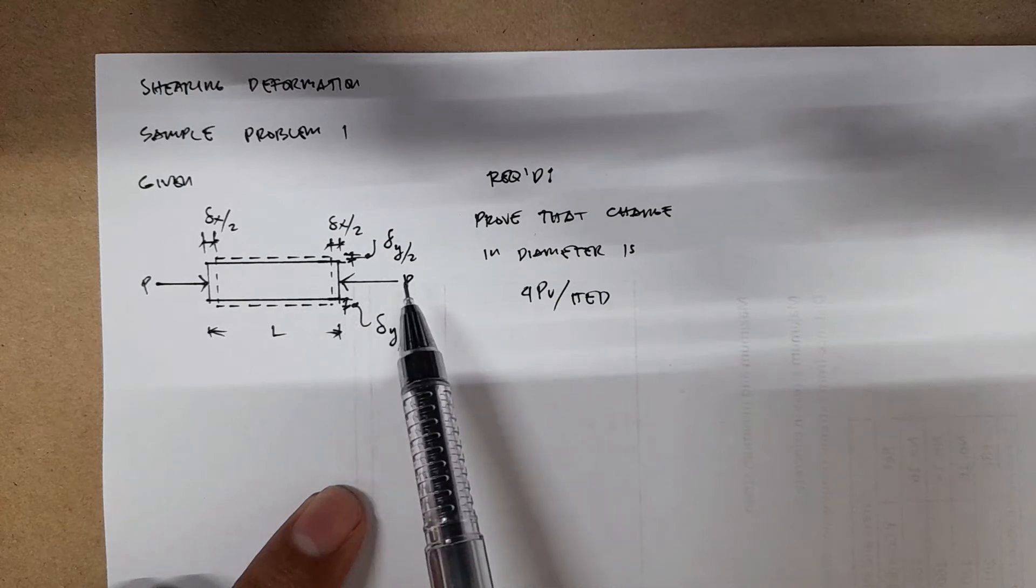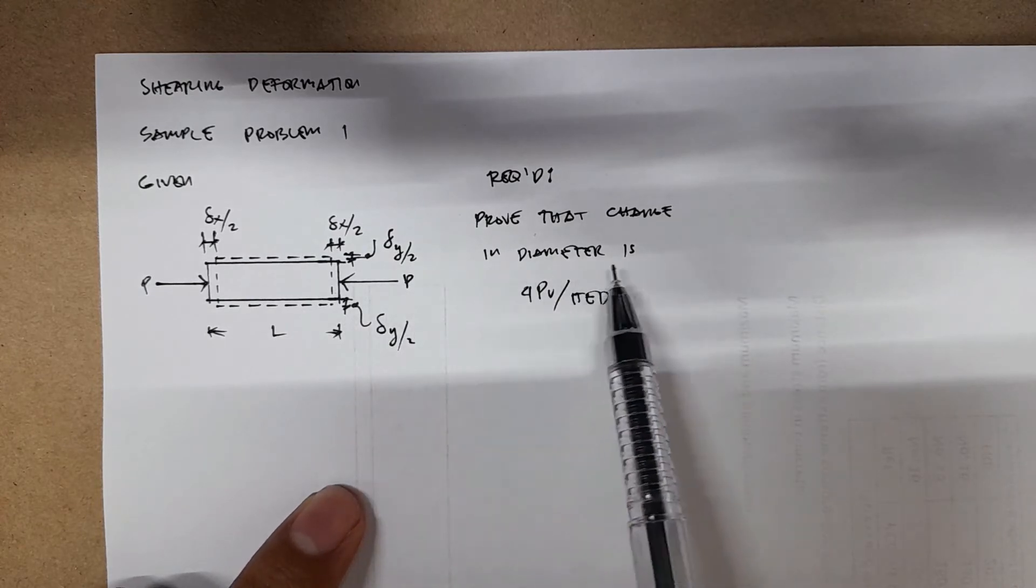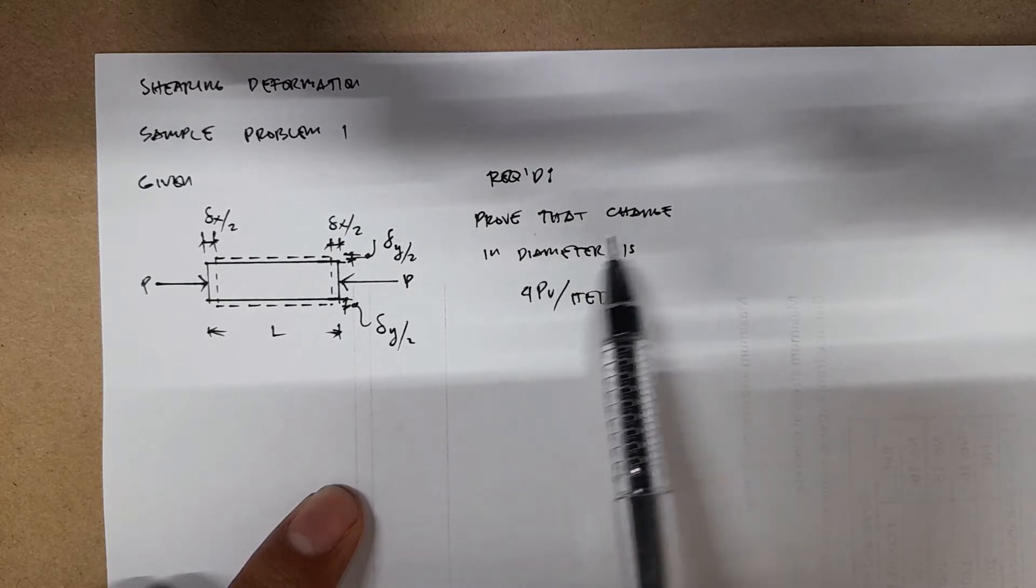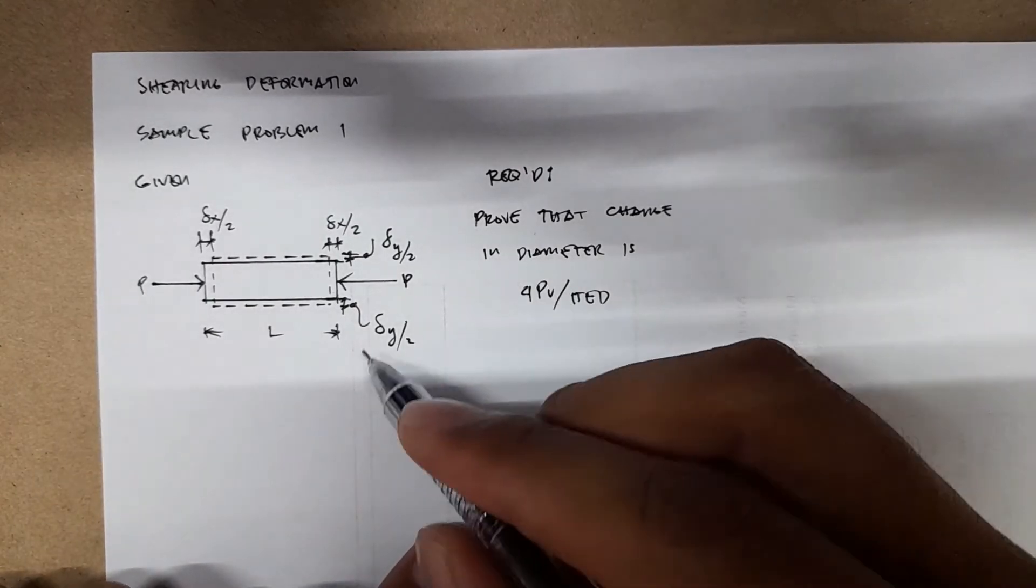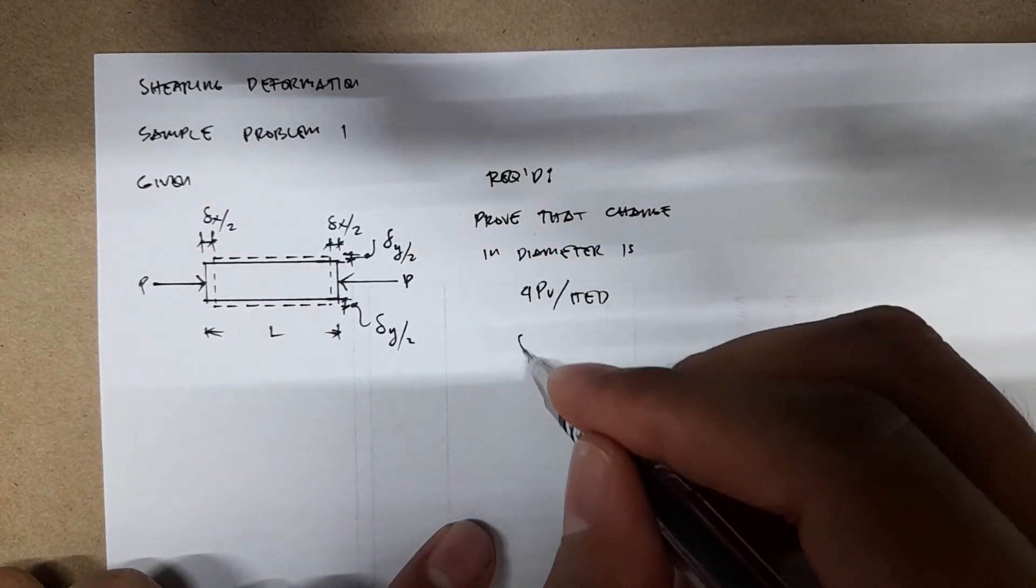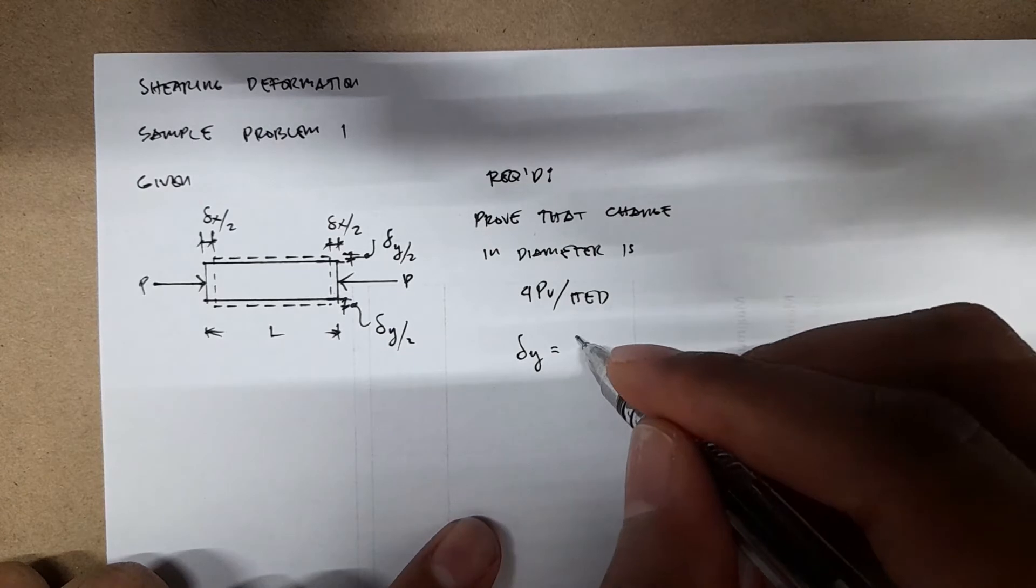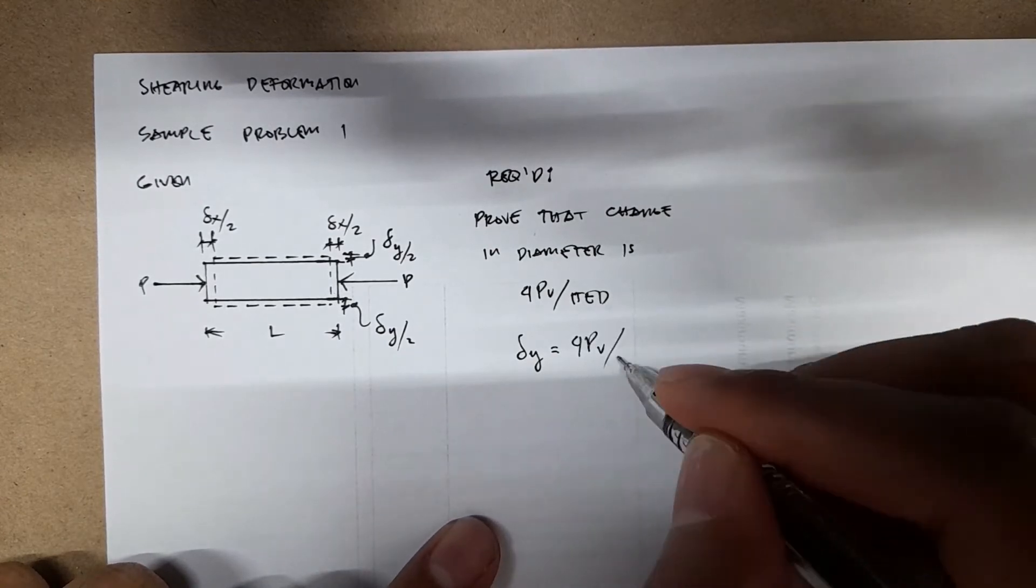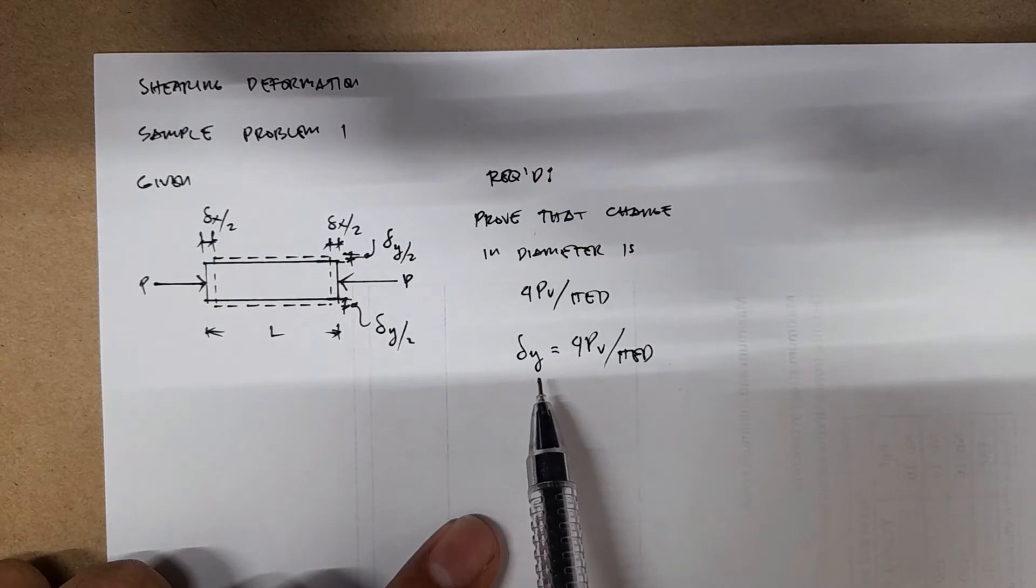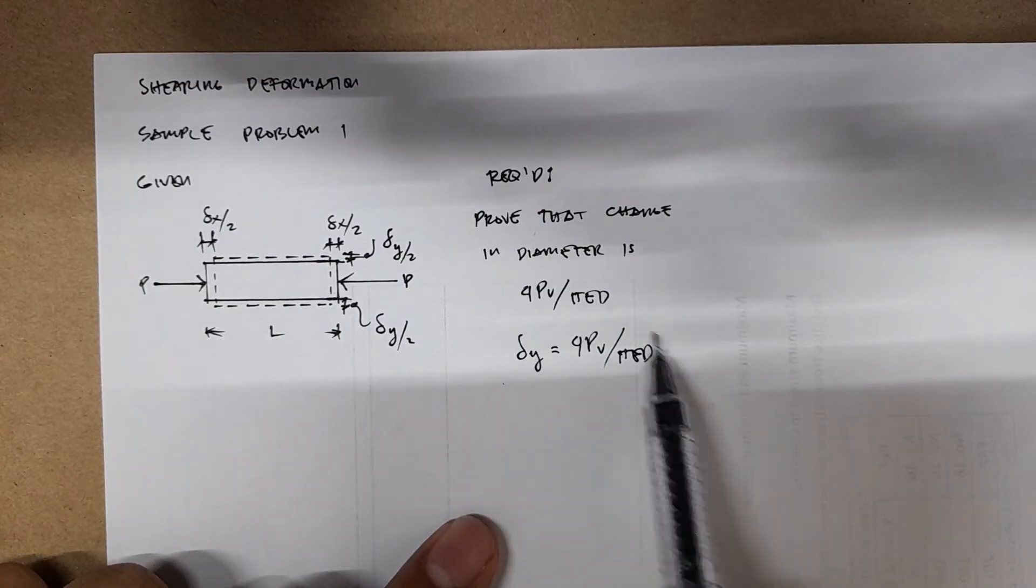The problem here wants us to prove that the change in diameter is 4PV over πED. So the change in diameter is essentially just the change in the y-direction, or that's deformation y, which is equal to 4PV divided by πED. So we're just required to arrive at this specific equation.